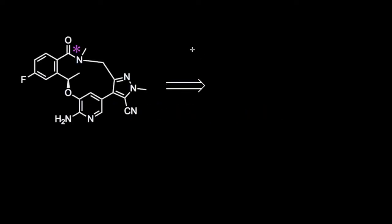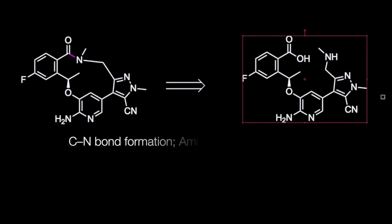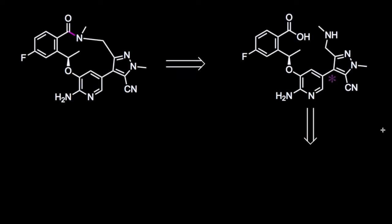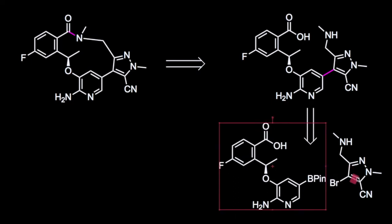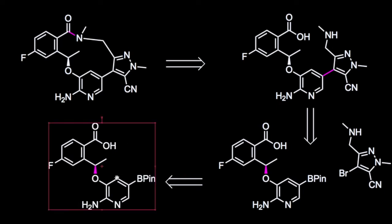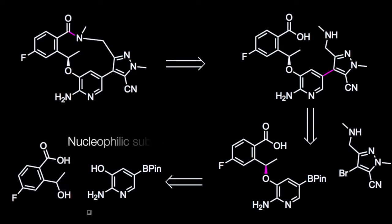A plausible disconnection for the synthesis of the macrocycle is the carbon-nitrogen bond formation via amide coupling. The formation of the carbon-carbon bond between the two heterocycles can be effected by a palladium-catalyzed Suzuki cross-coupling reaction. A final disconnection involving the formation of a carbon-oxygen bond can be accomplished by nucleophilic substitution of a good leaving group.